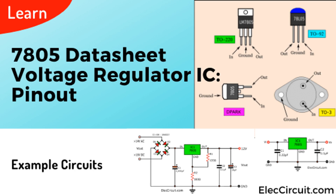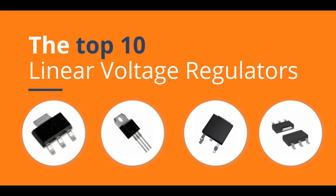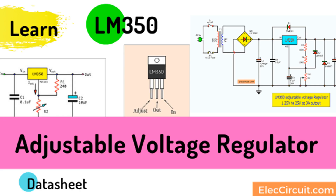The control element operates in one of two modes: Linear (also known as Series) Regulation or Switching Regulation. In linear regulation, the control element operates in its active region, where it acts as a variable resistor to adjust the voltage drop across it. By changing its resistance, the control element regulates the output voltage. Linear regulators are simple and provide smooth voltage regulation but are less efficient, especially when there is a large difference between input and output voltages.